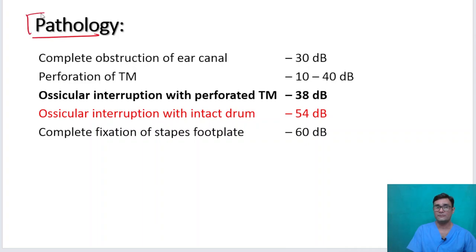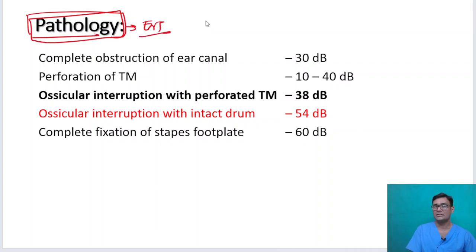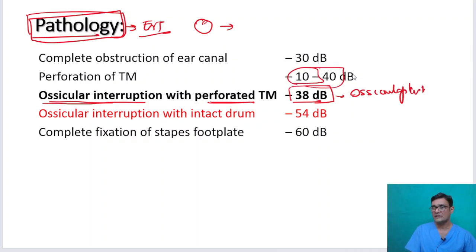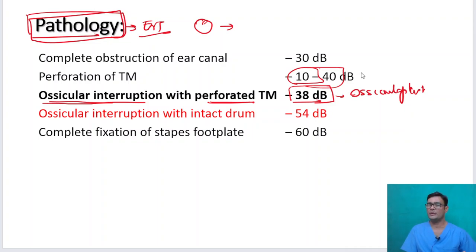Severe hearing loss is 71–90 dB, changing in 20 dB steps, and profound is greater than 91 dB. There are five categories: mild, moderate, moderately severe, severe, and profound. This is important from the NEET PG point of view. When an audiologist says the patient has moderately severe hearing loss, it means 56–70 dB hearing loss.